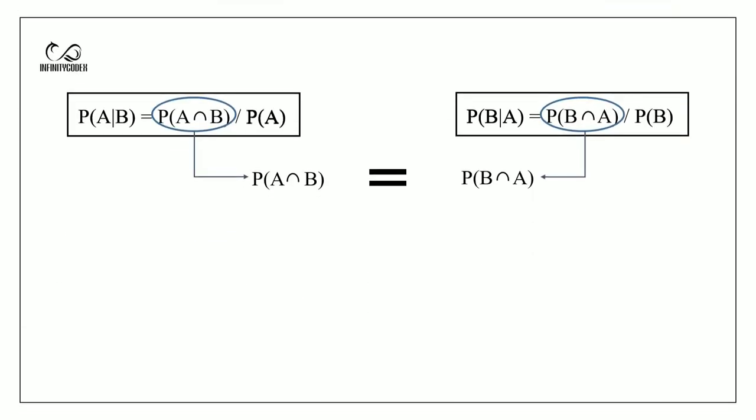I can take the second portion and substitute at the top. That will give us the probability of A given B equals the probability of B given A times the probability of A divided by the probability of B.